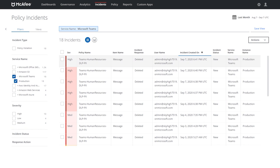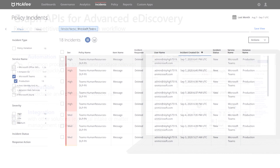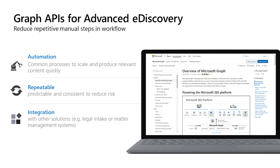Advanced eDiscovery helps customers quickly find relevant data to respond to their legal and regulatory needs. Advanced eDiscovery APIs are currently available in public preview and support creating and managing three major types of resources: cases, review sets, and review set queries. These APIs enable customers to build apps that can automate common and repetitive processes, creating a repeatable, predictable, and consistent process to reduce potential human error. eDiscovery APIs can also be used for integrating Microsoft's Advanced eDiscovery with third-party ISV solutions. For more details, please check our Graph scaling video on Advanced eDiscovery.